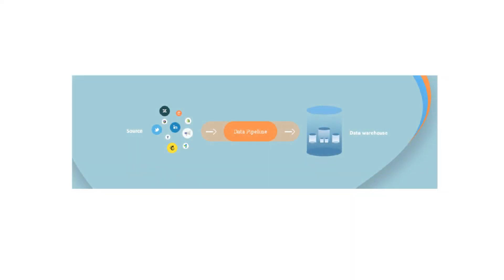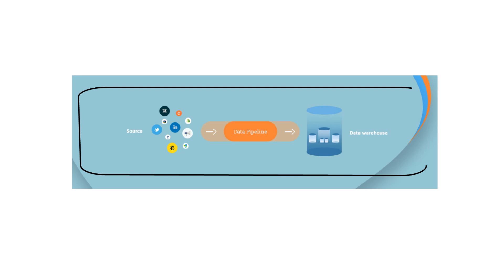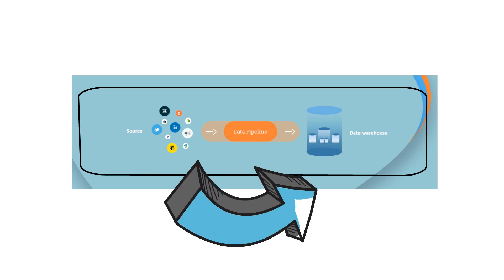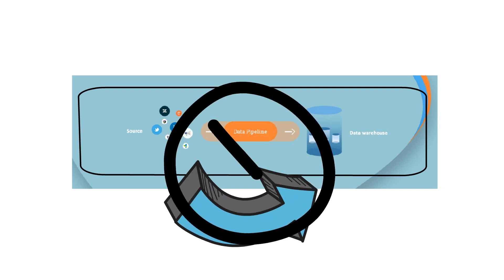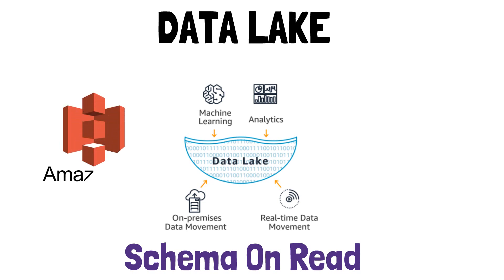Now let's talk about data lakes. In my last video we talked about ETL pipelines and data warehouses. Data comes in various forms and you need to run transformation jobs to store everything in one place such as a data warehouse. A data lake is a centralized repository that allows you to store all your data — structured and unstructured — and use it directly for analytics. To store data in a data warehouse you have to run a long data pipeline from pulling data to transforming it and creating a proper schema, but for data lakes you don't have to do all that. Data lakes work on the concept of schema-on-read.